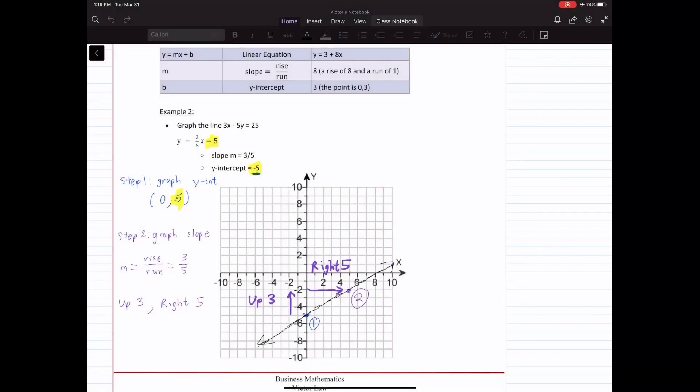Example 2: graph the line 3x minus 5y equals 25. Our first step is to convert the equation into y equals mx plus b. If we convert that equation, we're going to get y equals 3 over 5x minus 5. So our y-intercept is negative 5, and our slope is 3 over 5.